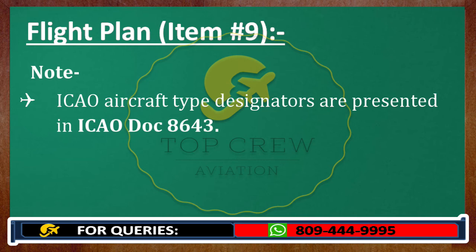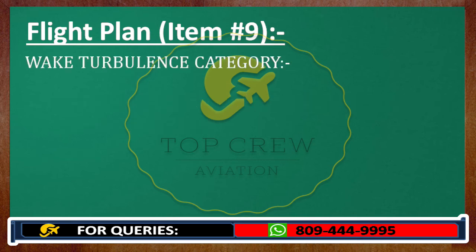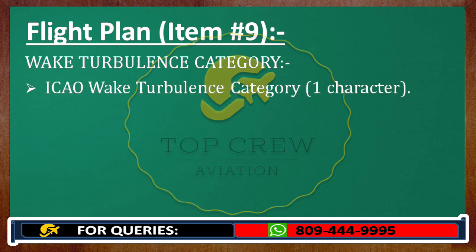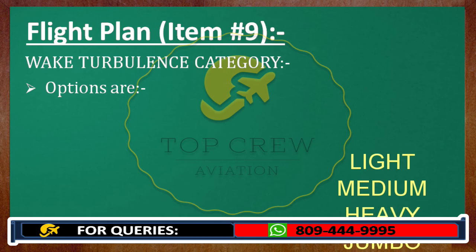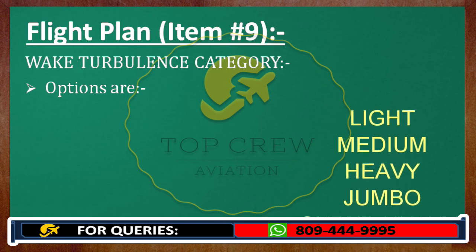You also have to add the ICAO wake turbulence category. Before mentioning it, you should know how to indicate it and what the categories are. Wake turbulence categories are: Light, Medium, Heavy, Jumbo, and Super Heavy.